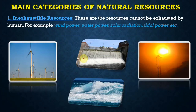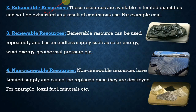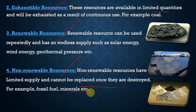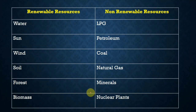The main categories of natural resources are: inexhaustive resources — those that cannot be exhausted by humans, such as wind power, water power, solar radiation, and tidal power; exhaustive resources — available in limited quantities and will be exhausted through continuous use, such as coal; renewable resources — which can be used repeatedly with an endless supply, such as solar energy and geothermal energy; and non-renewable resources — with limited supply that cannot be replaced once destroyed, such as fossil fuels and minerals.